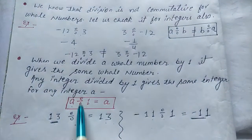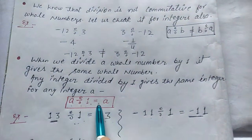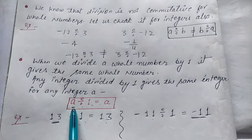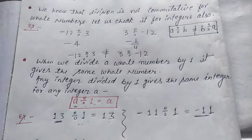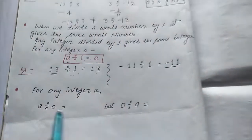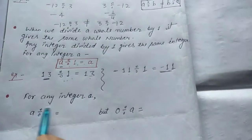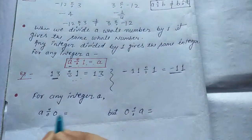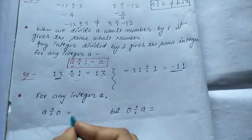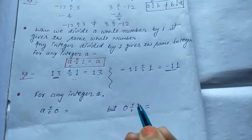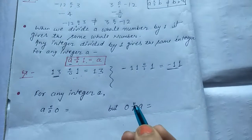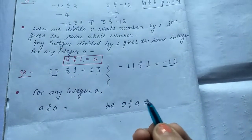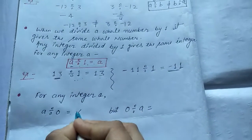It means a divided by 1 equals to a, where a is an integer. Now the next property: for any integer a, a divided by 0 is meaningless and not defined — means infinity.